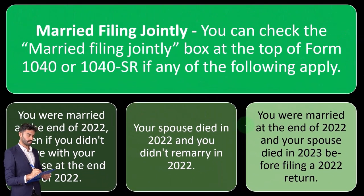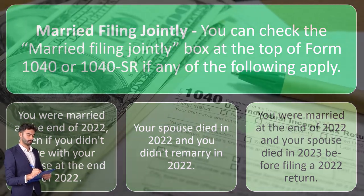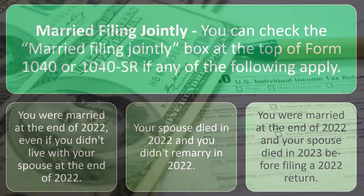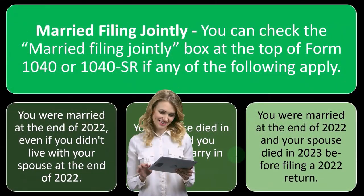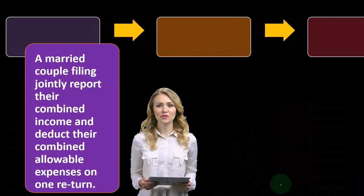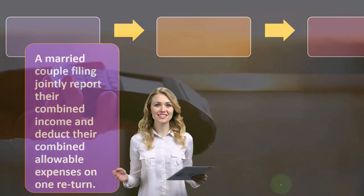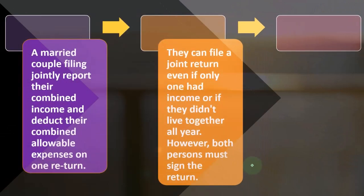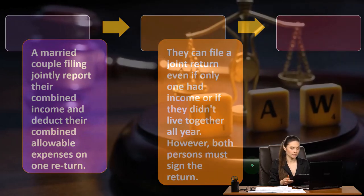Even though your spouse died in 2023, since you file by April 15th or 18th of 2023, you were still married in 2022. A married couple filing jointly reports their combined income and deducts their combined allowable expenses on one return. That's the point of the married filing joint return — you're thinking of yourselves as one entity, with the marriage being essentially a contractual agreement under tax law.